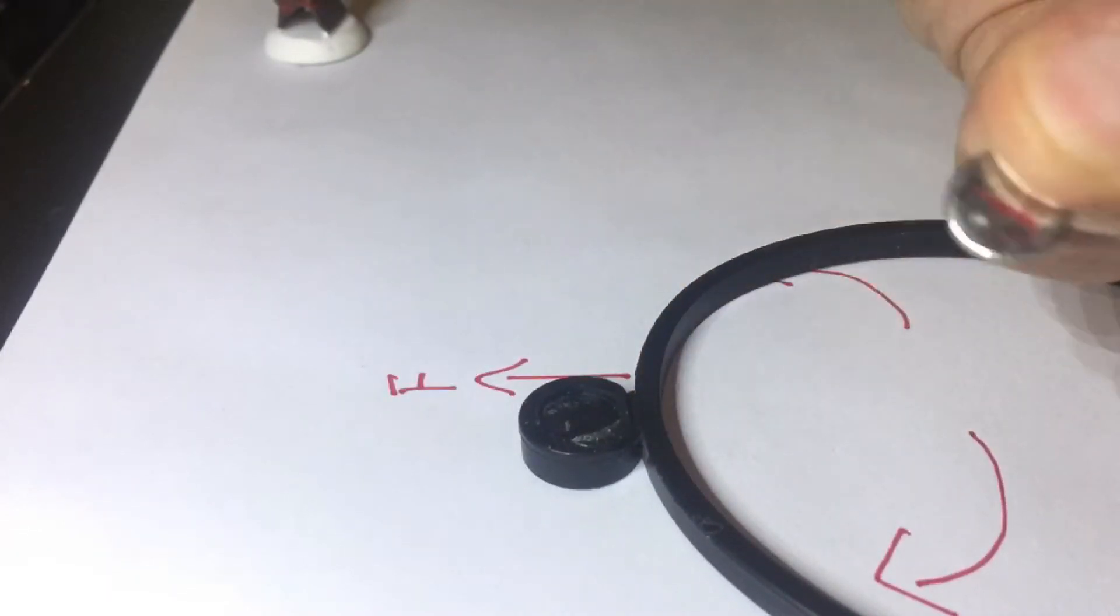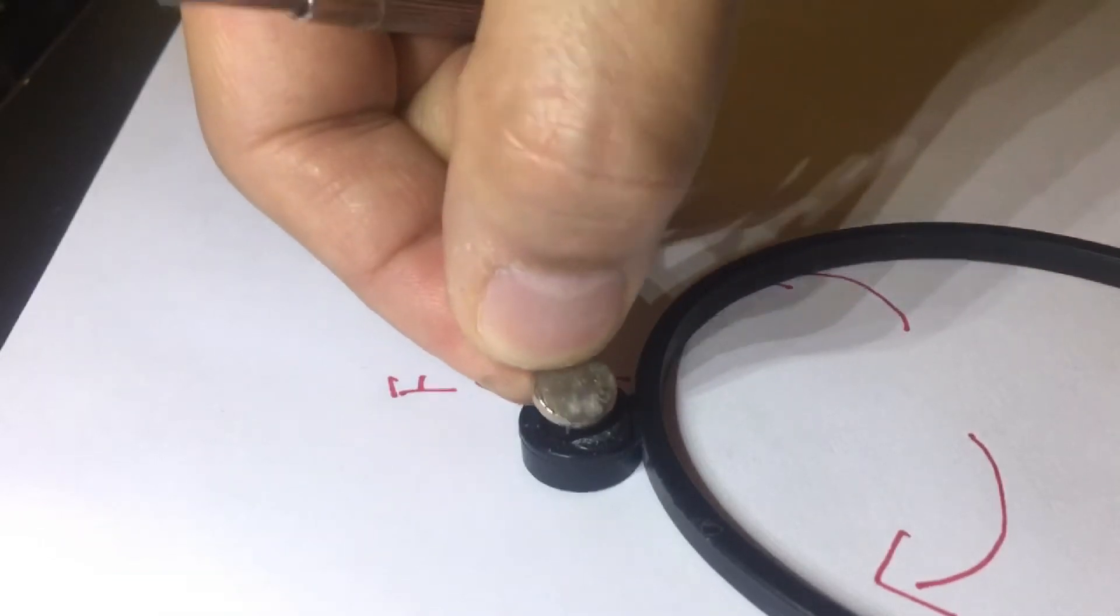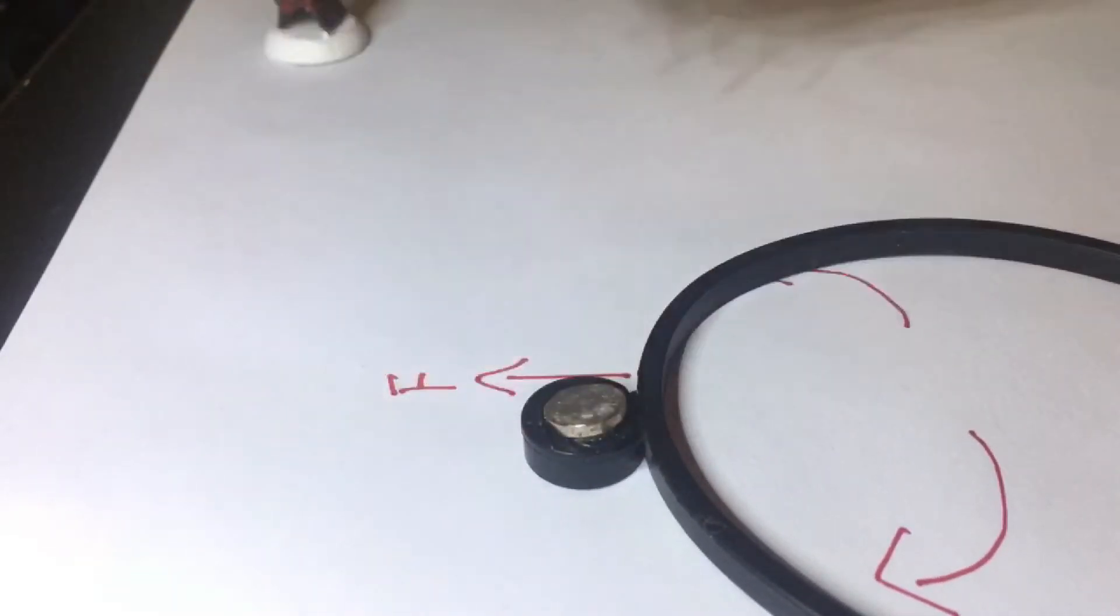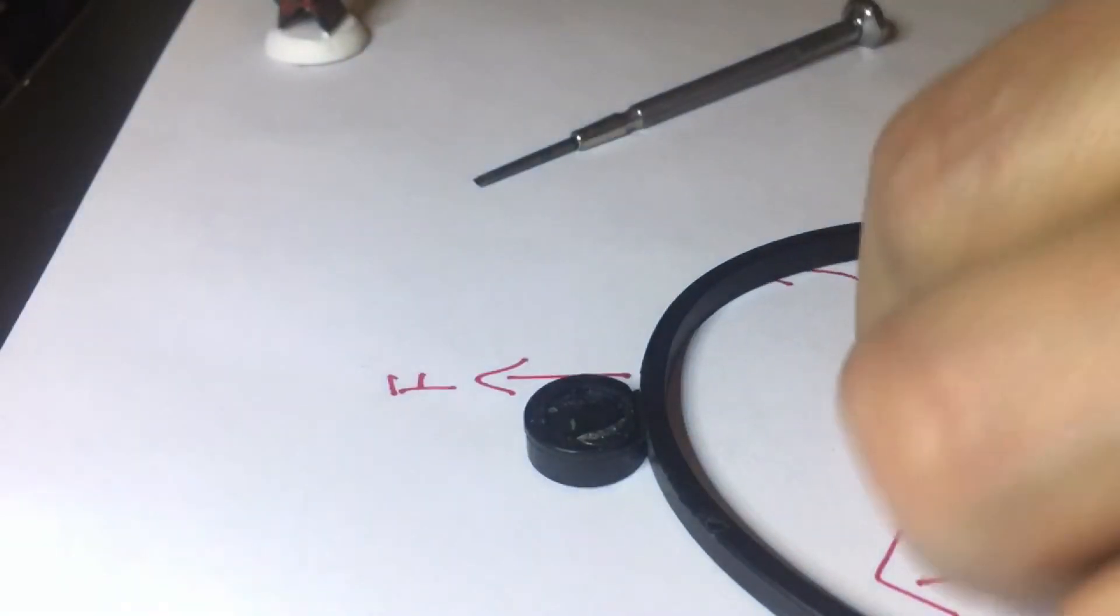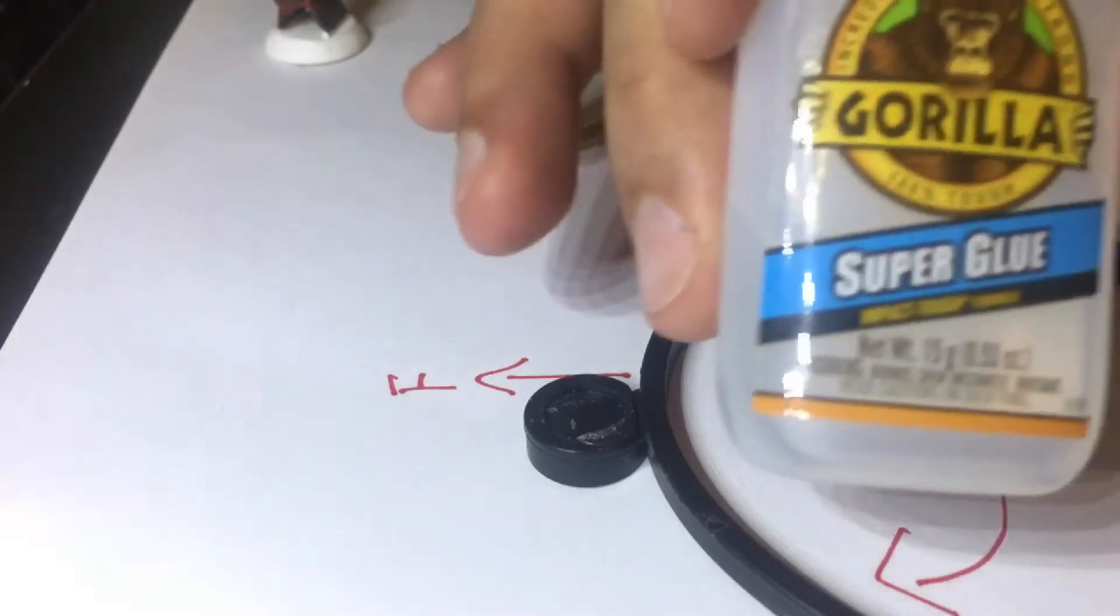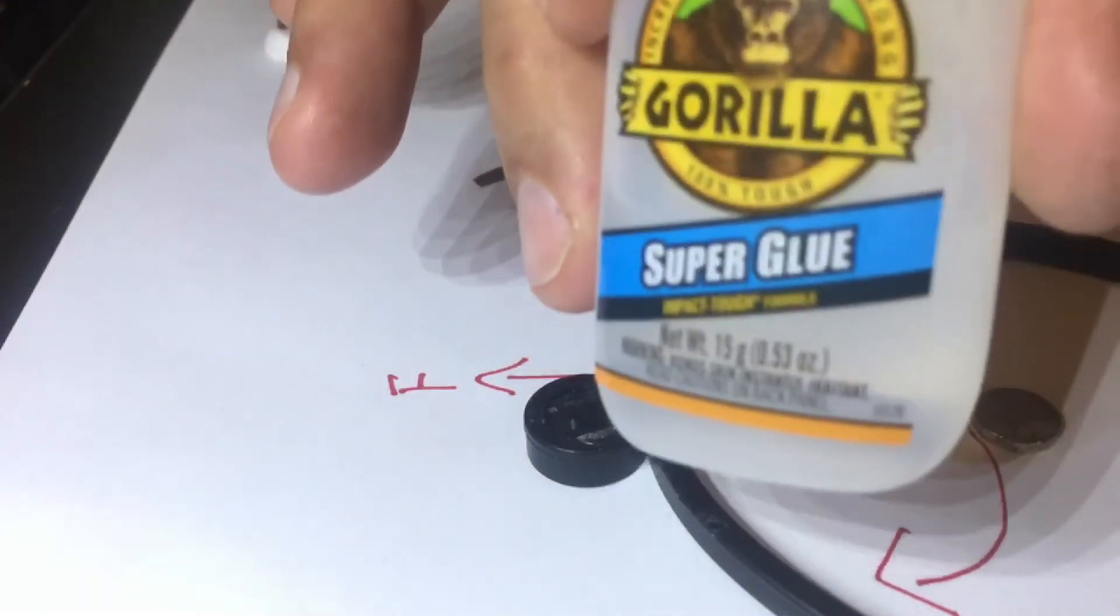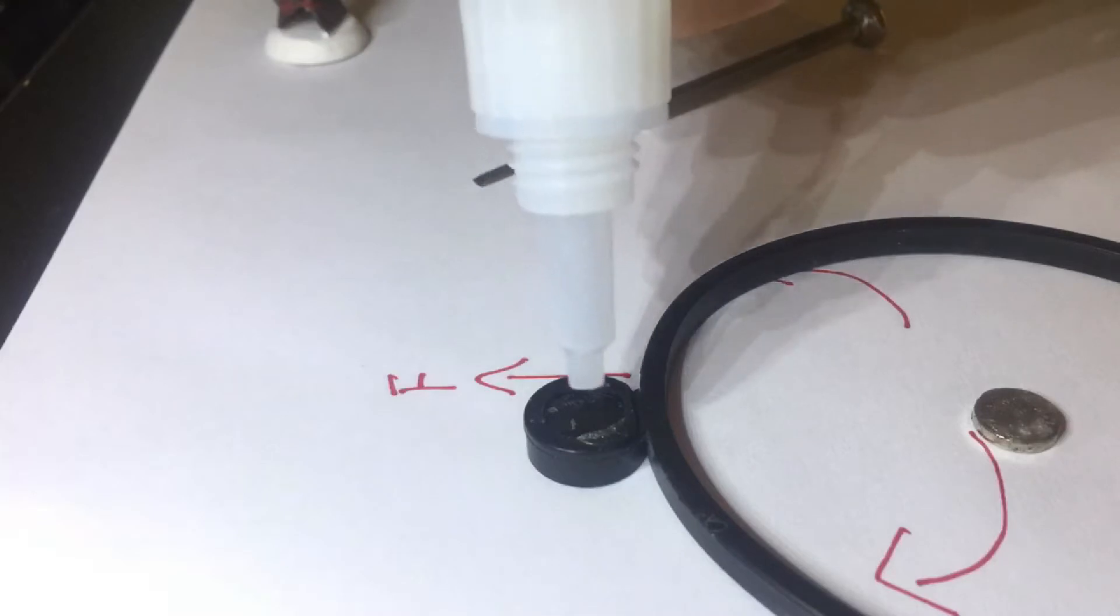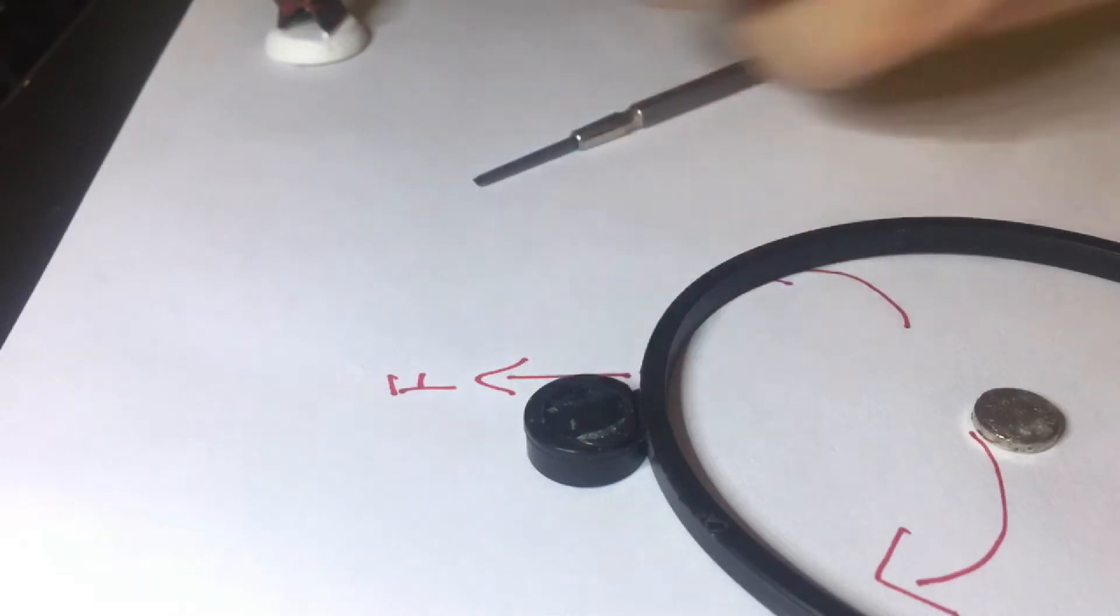Flip the magnet over and pop it back in. Before you pop it back in, you want to use glue. I use Gorilla Glue. You can use Loctite glue, Crazy Glue - just put a dab of glue. It doesn't need a lot. Press the magnet back into the groove.